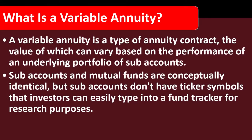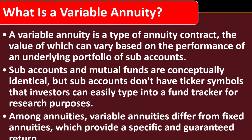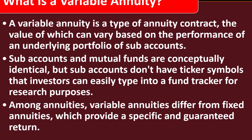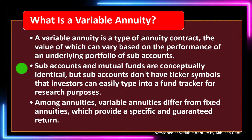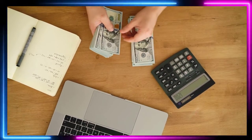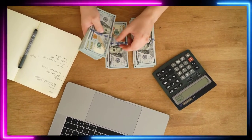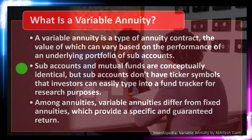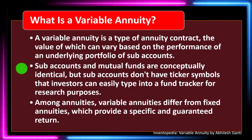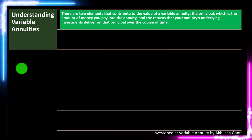Sub-accounts and mutual funds are conceptually identical, but sub-accounts don't have ticker symbols that investors can easily type into a fund tracker for research. Among annuities, variable annuities differ from fixed annuities, which provide a specific and guaranteed return. With a variable annuity based on market fluctuations, there could be a good outcome, but there's also risk involved, which could have a downside — so you want to balance those when doing retirement planning.